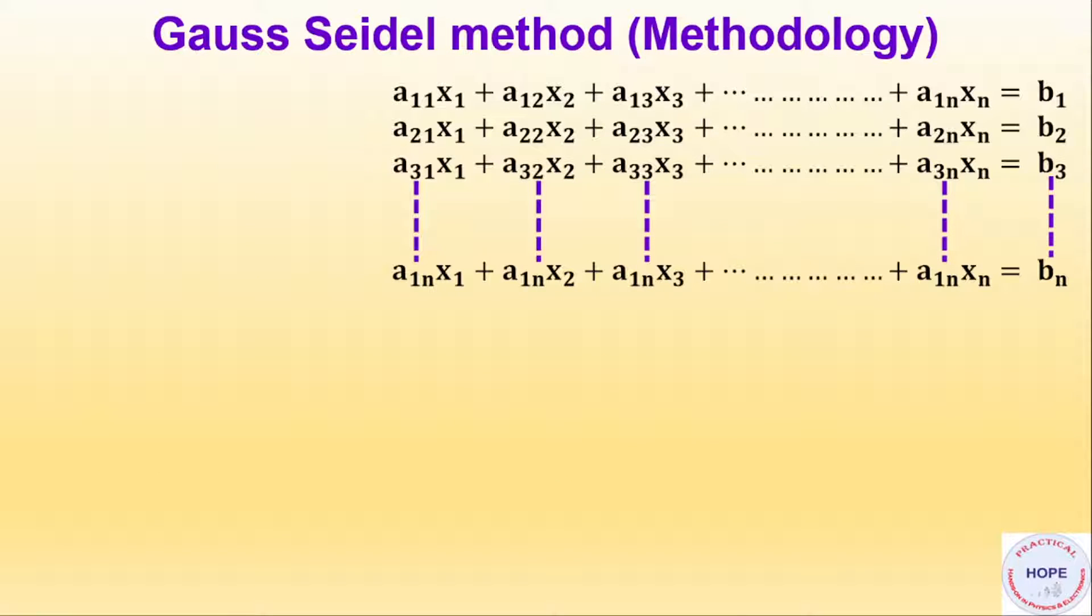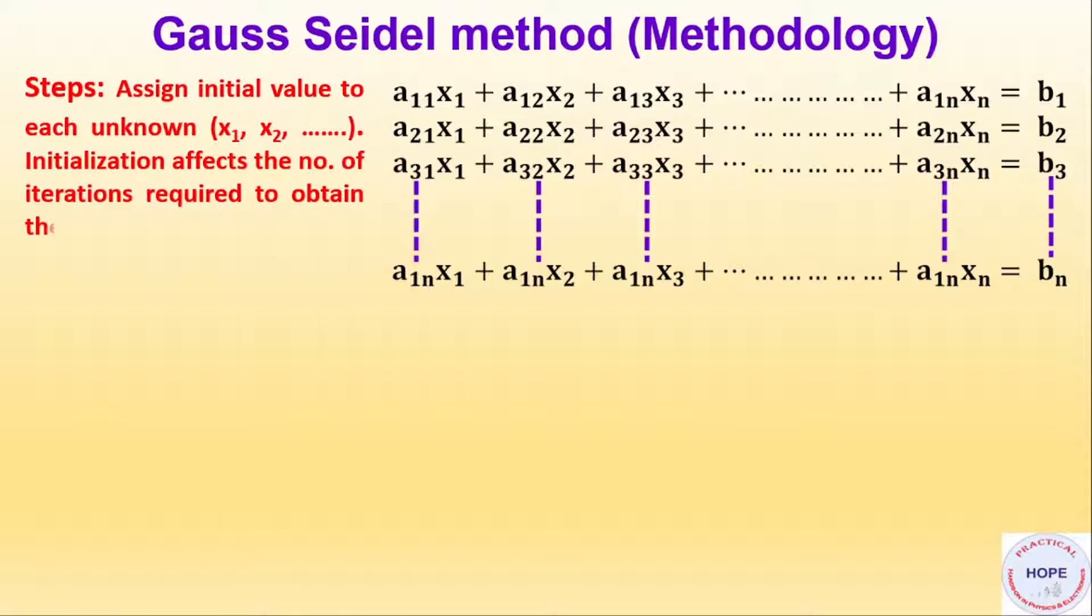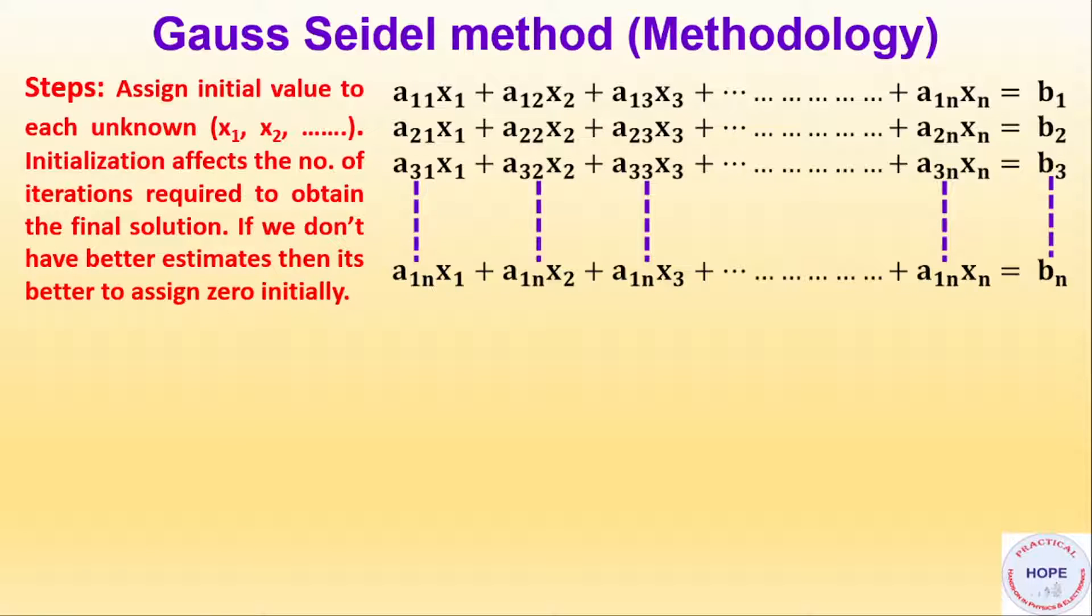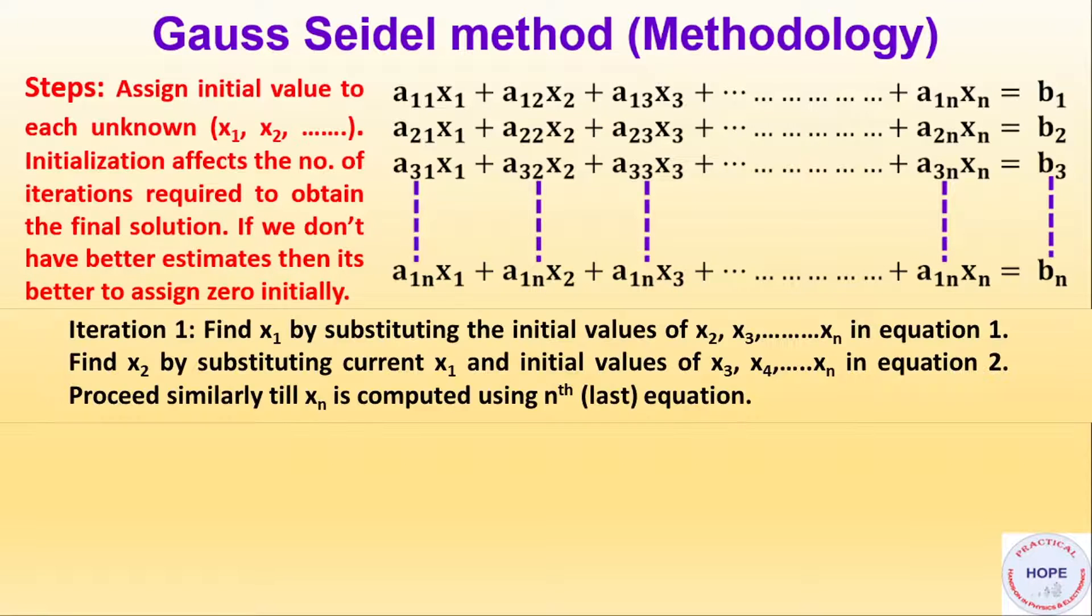Next, methodology. First we assign initial value to each unknown, x1, x2 till xn. Initialization affects the number of iterations required to obtain the final solution. If we don't have better estimates, then it is better to assign 0 initially. Next, first iteration.